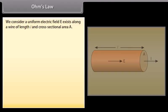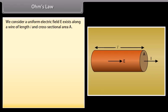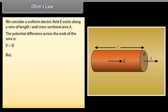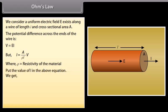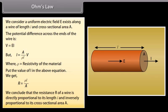Considering a uniform electric field E along a wire of length L and cross-sectional area A, the potential difference across the ends is V = EL. The current I = (A / ρL) × V, where ρ is the resistivity. Substituting, the resistance R = ρL / A. We conclude that resistance R is directly proportional to length L and inversely proportional to cross-sectional area A.